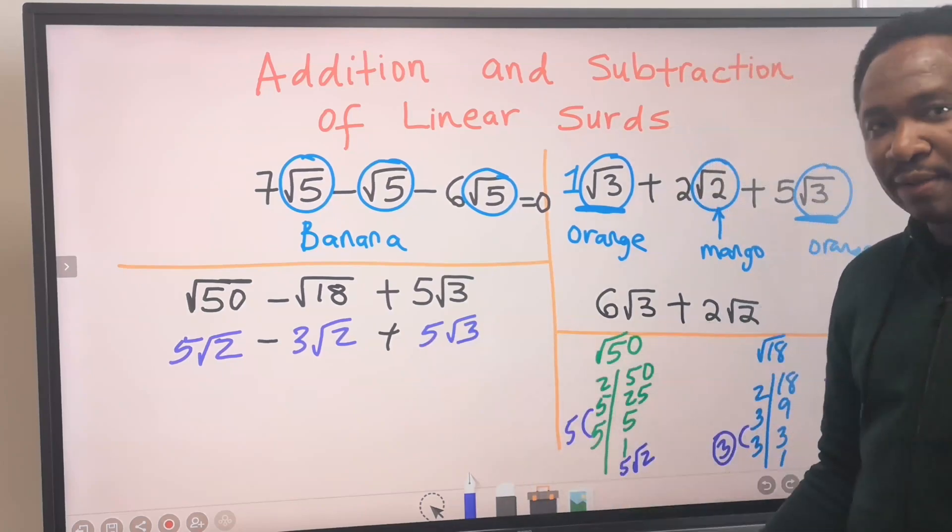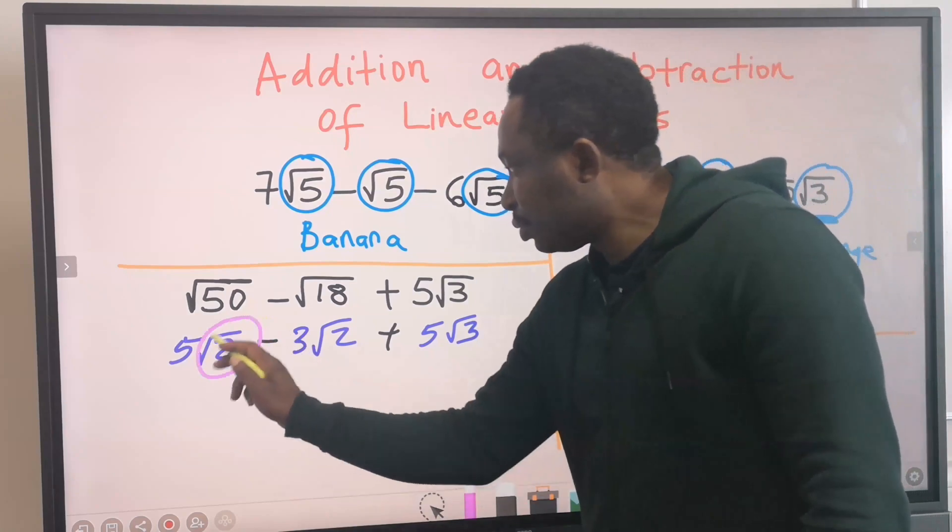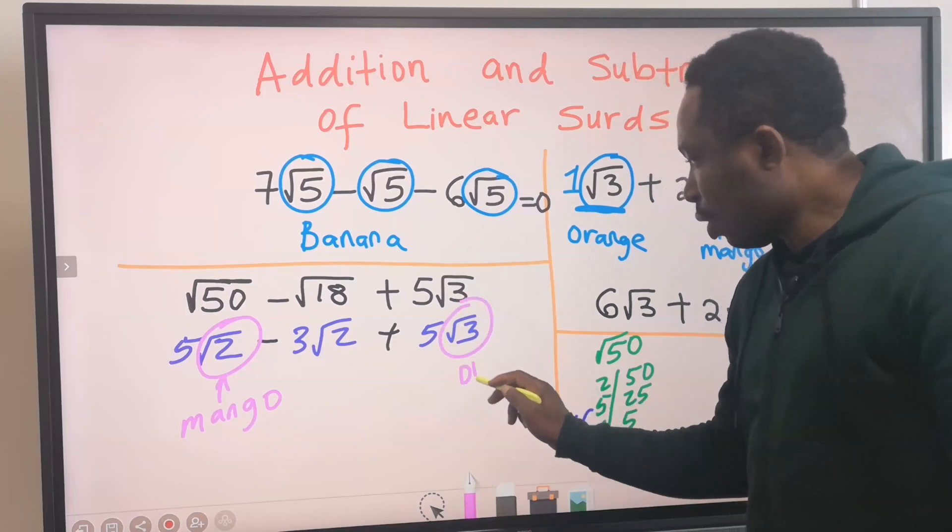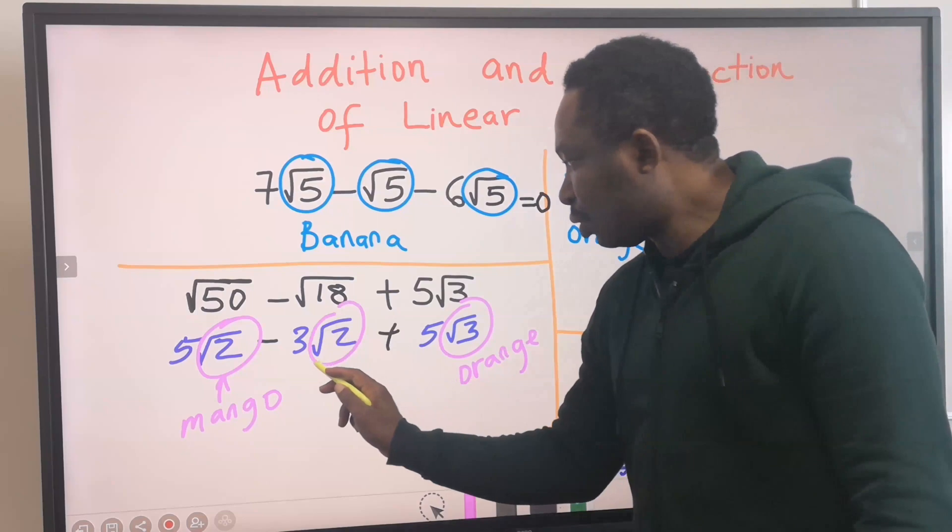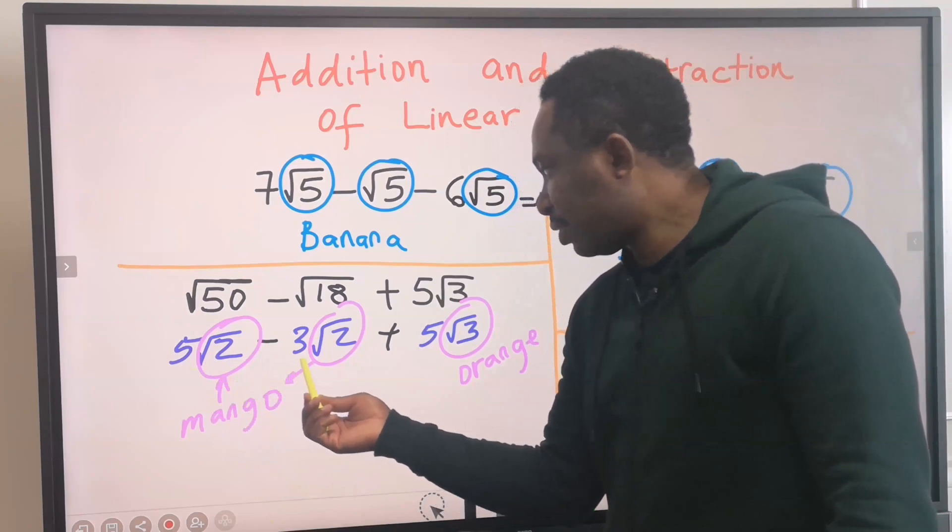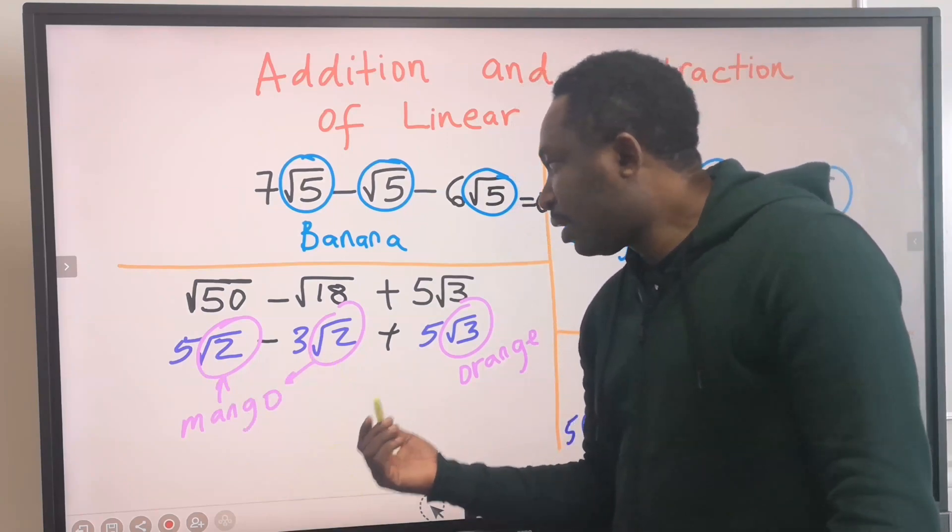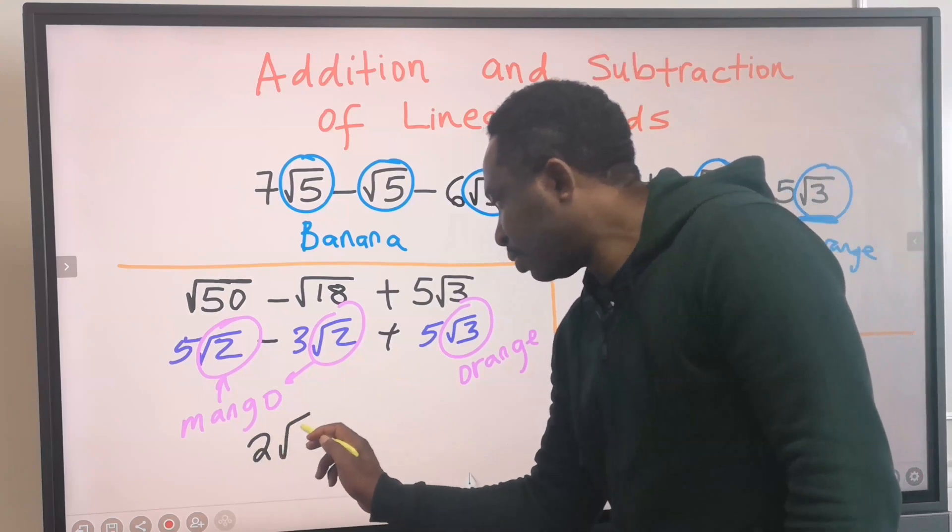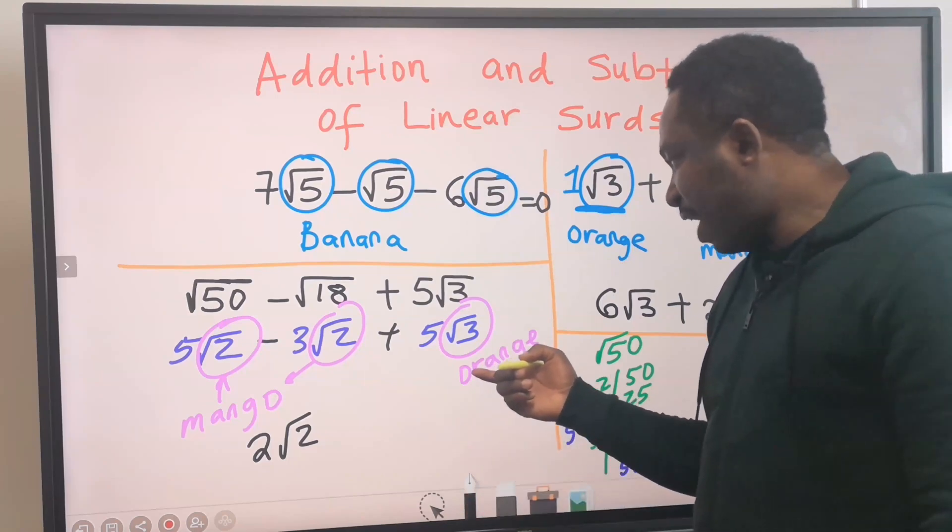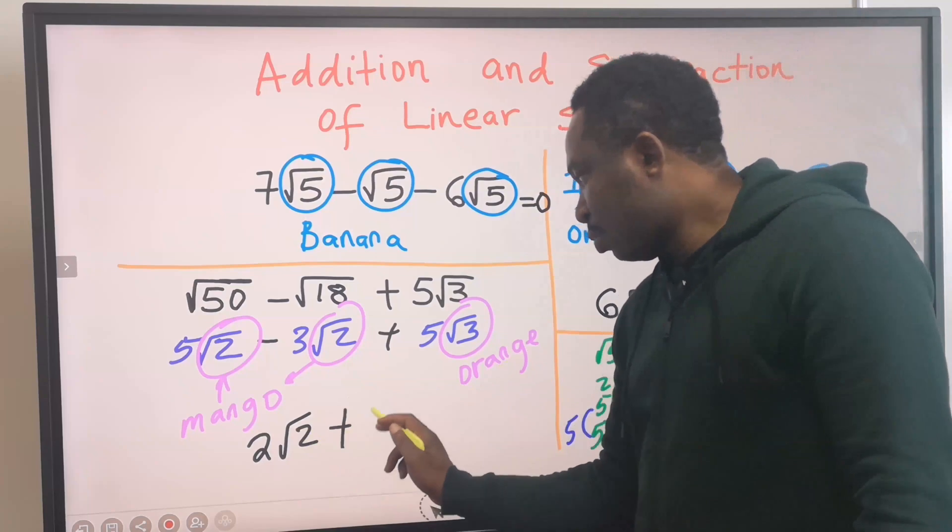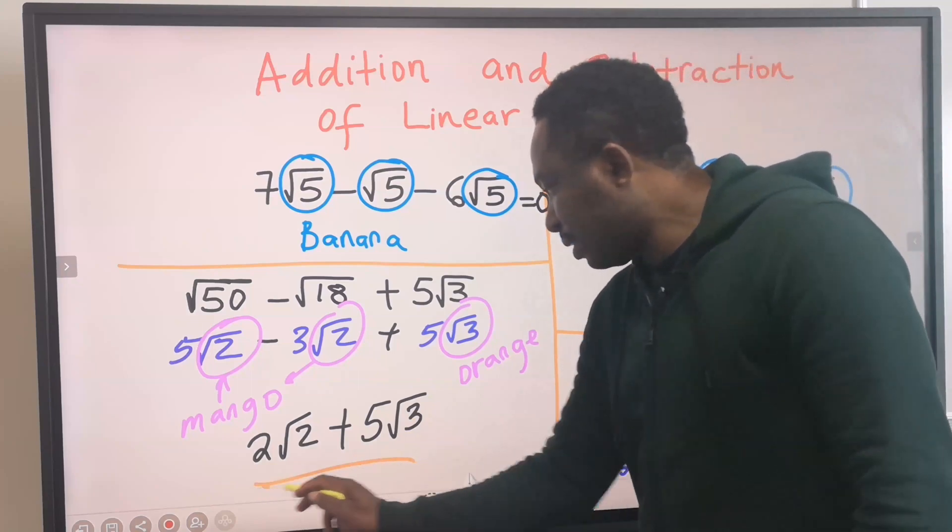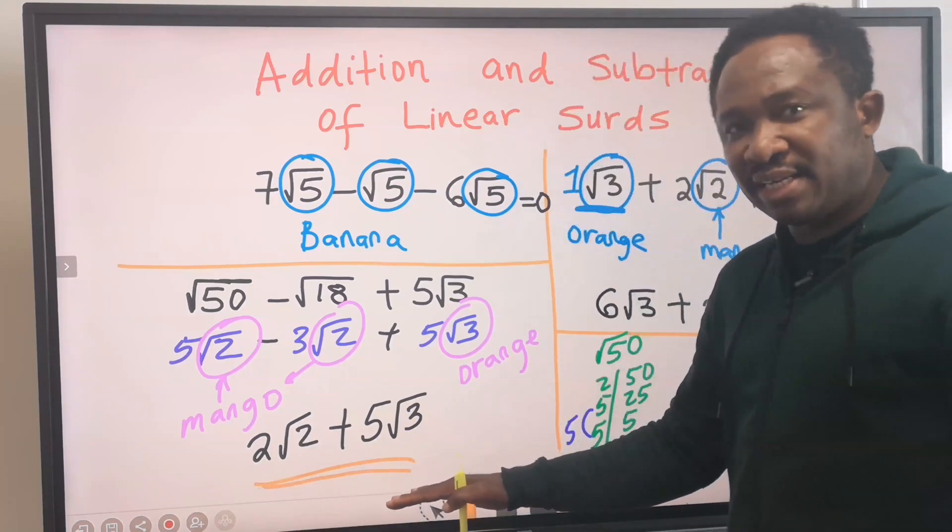Next, if root 2 is mango and root 3 is orange, this is also mango. You can see that 5 mangoes minus 3 mangoes will leave us with 2 mangoes. This is an orange. We cannot add these 5 oranges to these 2 mangoes. We just leave these 5 oranges here. And this becomes our answer. We can't simplify this any further.